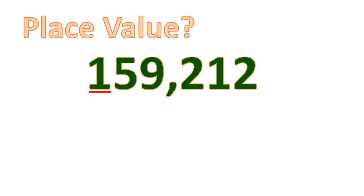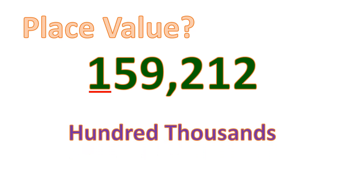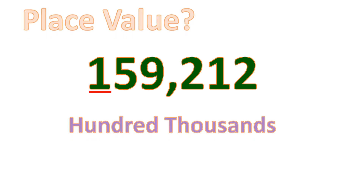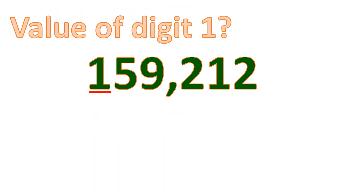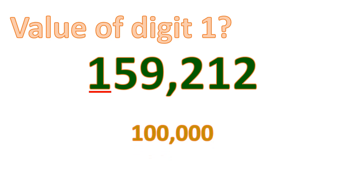How about digit one? What is its place value? Its place value is hundred thousands. And the value of digit one is one hundred thousand, because the digit is one and it is in the hundred thousands place.